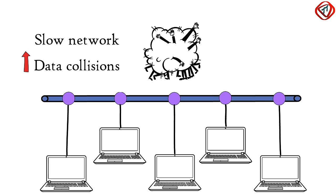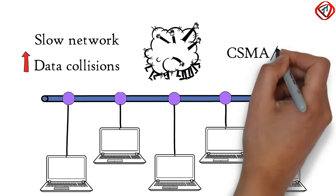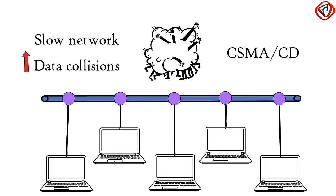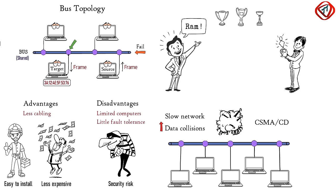The collision can be avoided by using an access control protocol — for example, Carrier Sense Multiple Access with Collision Detection (CSMA/CD). An example of bus topology is Ethernet LAN.